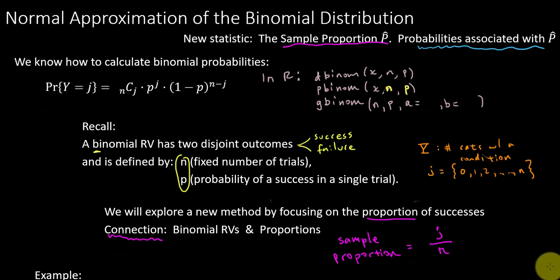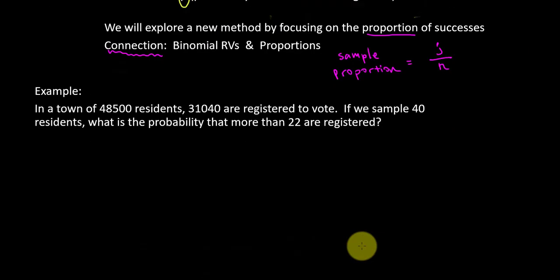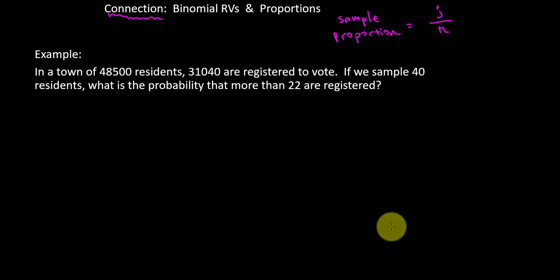To help establish this connection, I would like to do an example in which we're going to consider both perspectives here. We will use our old perspective, which is binary and number of successes. And then we'll see how we adapt to focus on proportions.